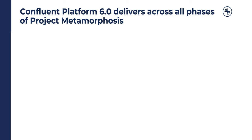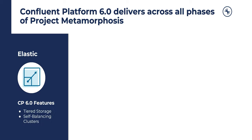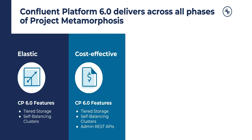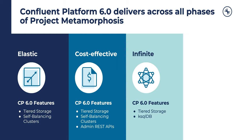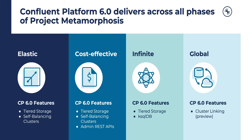Let's take a look at what those themes are so far. We've got elastic tiered storage, self-balancing clusters, cost-effectiveness — also tiered storage and REST APIs, and to some degree KSQL. This infinite aspect of Confluent Cloud comes to Confluent Platform with tiered storage. And for globalness, Confluent Platform runs in whatever major cloud provider you want — and now with the preview feature cluster linking, you've got that kind of global access as well.